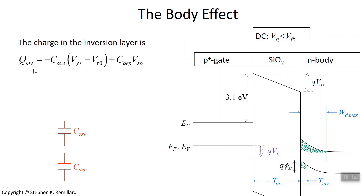So we'll write it like this. The inversion charge is the oxide capacitance times the voltage across the capacitor associated with inversion charge — so it's not just the gate-source voltage, which is the voltage placed across the oxide layer, but it's the gate-source voltage minus the threshold voltage, because inversion charge does not start to appear until V_gs is above threshold. And then you have the charge from the depletion capacitance, which is the depletion layer capacitance times the voltage between the source and the body, V_sb — which is exactly what's across the depletion layer. So we came up with this expression, argued two lectures ago.